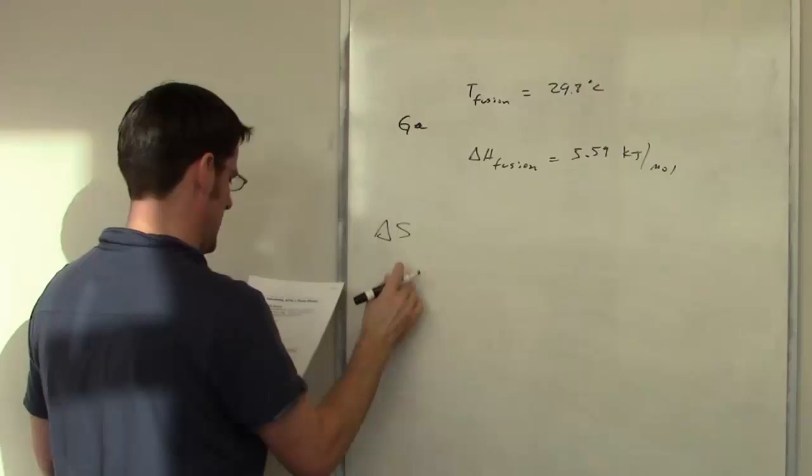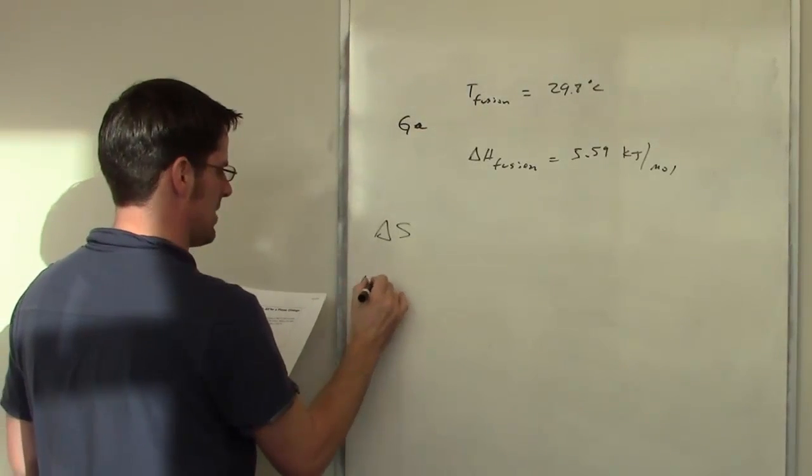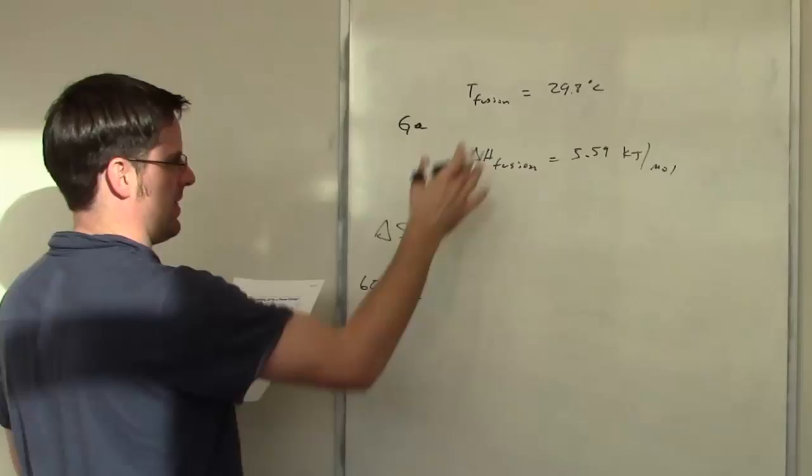It then asks what the value of delta S is when we have 60 grams of gallium solidifying at that temperature.